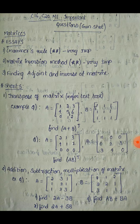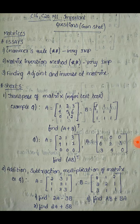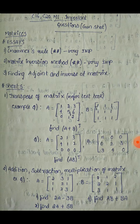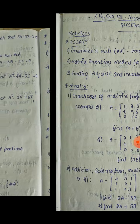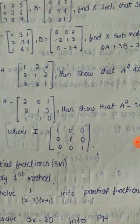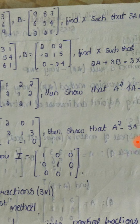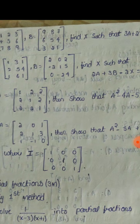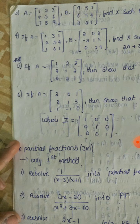For short answer questions on matrices: transpose of a matrix is very important — choose two example questions. Addition, subtraction, and multiplication of matrices are also very important. The second short answer model involves a B matrix.